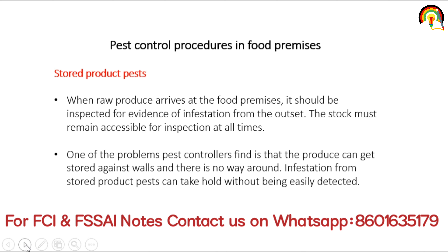Pest Control Procedures in Food Premises. First: Stored Product Pest. When raw produce arrives at the food premises, it should be inspected for evidence of infestation from the outset. Stock must remain accessible for inspection at all times. One problem pest controllers find is that produce can get stored against a wall with no way around — infestation from stored product pests can take hold without being easily detected.